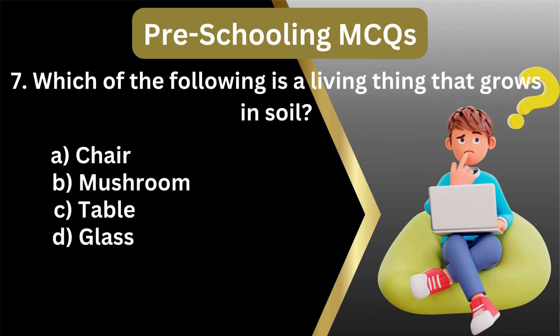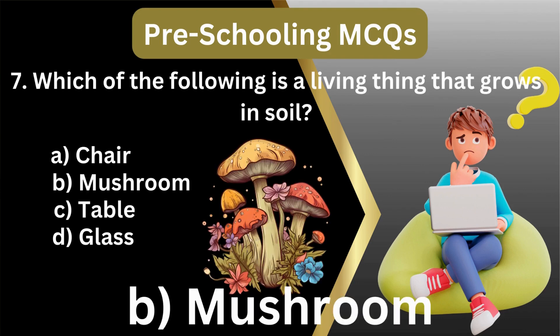7. Which of the following is a living thing that grows in soil? A. Shrub, mushroom, table, glass. Answer: B. Mushroom.